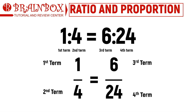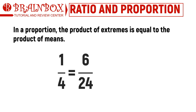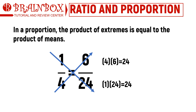The interesting fact about proportions is that the product of the extremes is always equal to the product of the means. Thus we use the technique called cross multiplication, in which we multiply numbers placed at cross positions to determine whether the two products are equal or not. In this example, the product of the extremes 1 and 24 is 24, and the product of the means 4 and 6 is also 24.